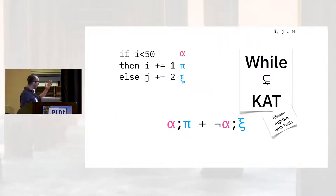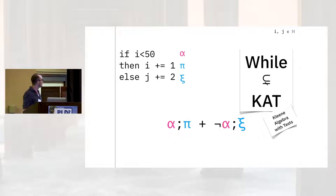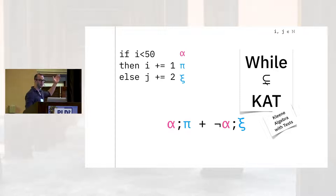Kleene algebra with tests, or KAT, is to a first approximation a generalization of the while programming language. Here's a while program — it's got an if in it. If i is less than 50, we'll increment the variable i; otherwise, we'll double increment the variable j. Simple enough while program.